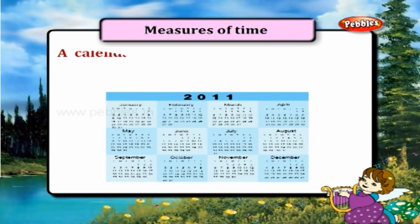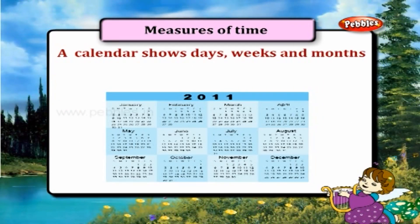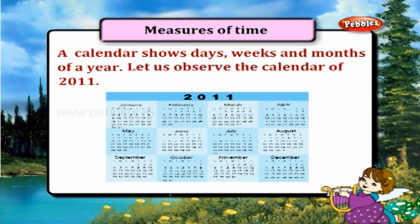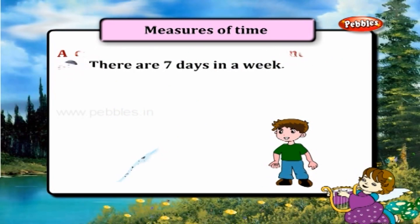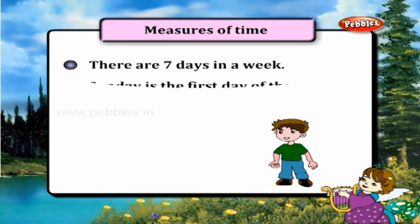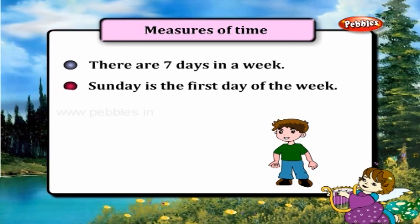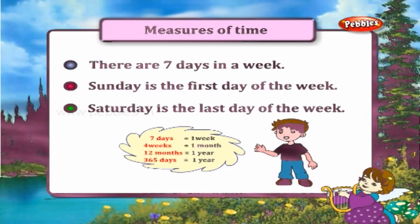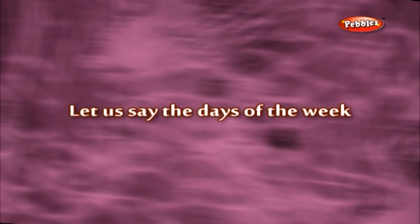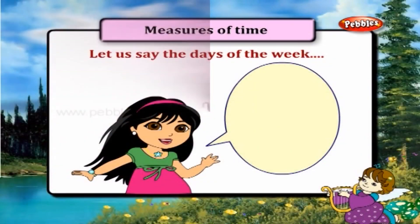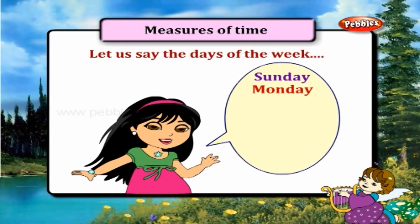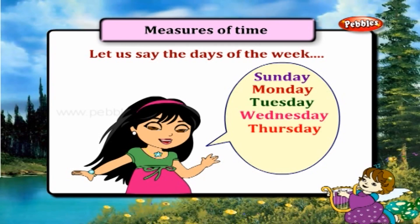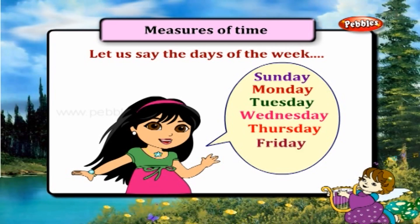A calendar shows days, weeks, and months of a year. Let us observe the calendar of 2011. There are seven days in a week. Sunday is the first day of the week and Saturday is the last day. The days of the week are: Sunday, Monday, Tuesday, Wednesday, Thursday, Friday, and Saturday.